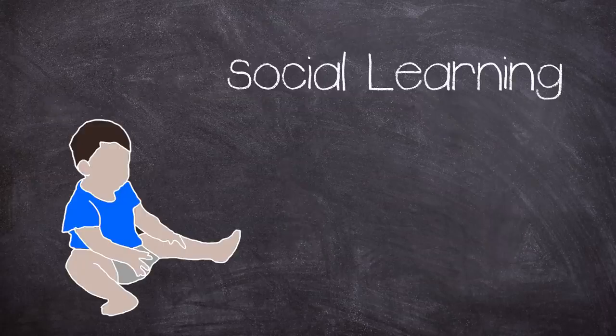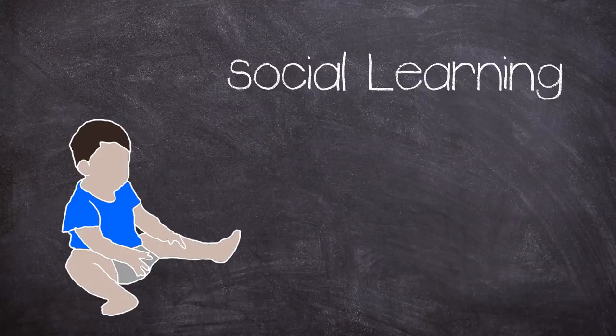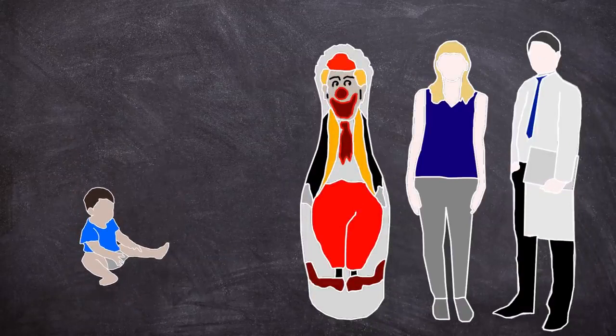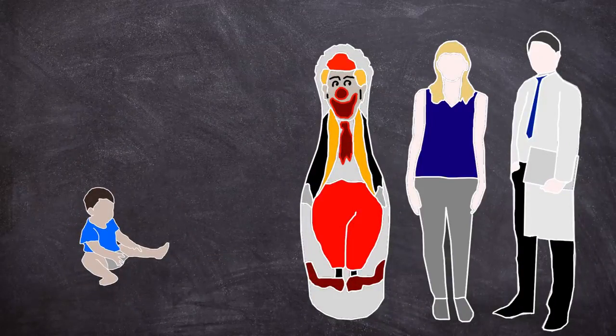The Bobo doll experiments helped further Bandura's social learning theory and carve a new way of thinking. This is mainly due to children observing the punished model, and subsequently understanding this to modify their own response to the Bobo doll, without being punished themselves.